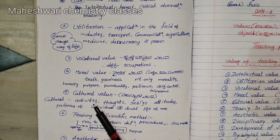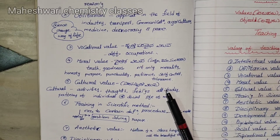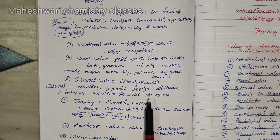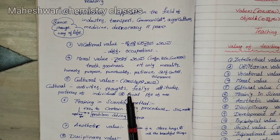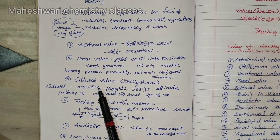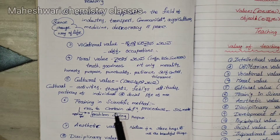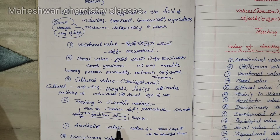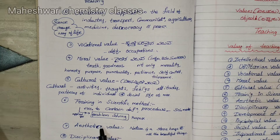Next, cultural value involves activities, thoughts, feelings, attitudes, patterns of individual and social life of human beings — these are cultural values. Training in scientific method involves problem-solving purpose and problem-solving method — it is a procedure for learning.